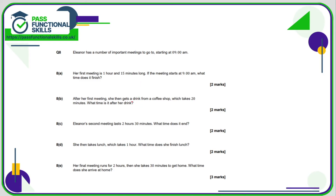Question 8: Elena has important meetings starting at 9 am. Her first meeting is 1 hour 15 minutes long. Starting at 9, we add 1 hour to get 10 am, then add 15 minutes to get 10:15. After her first meeting she gets a drink from a coffee shop which takes 20 minutes: 15 plus 20 is 35, so it's 10:35.